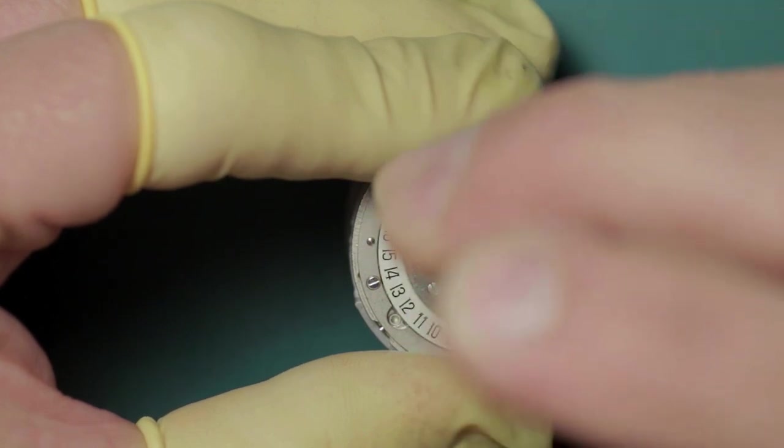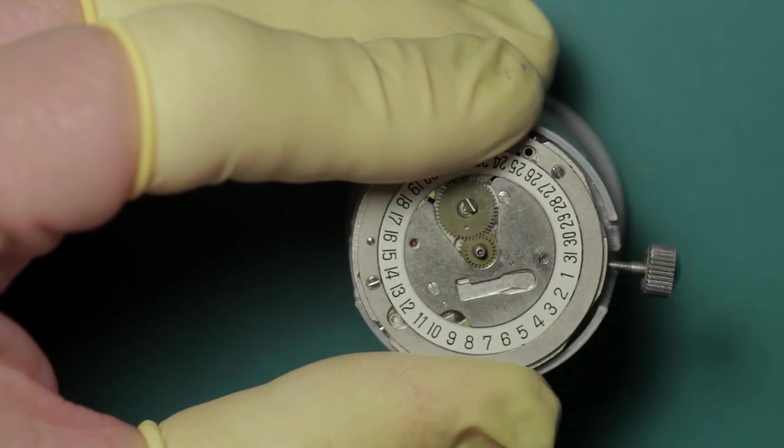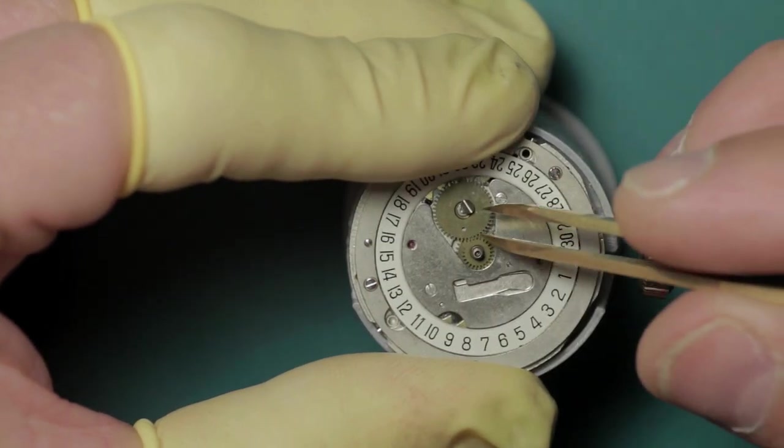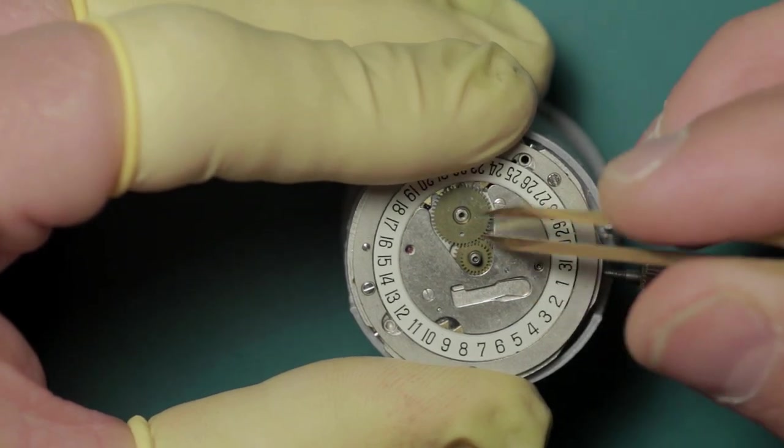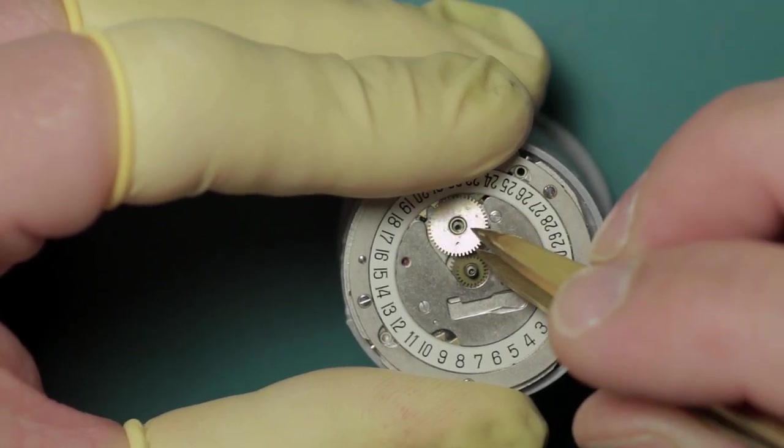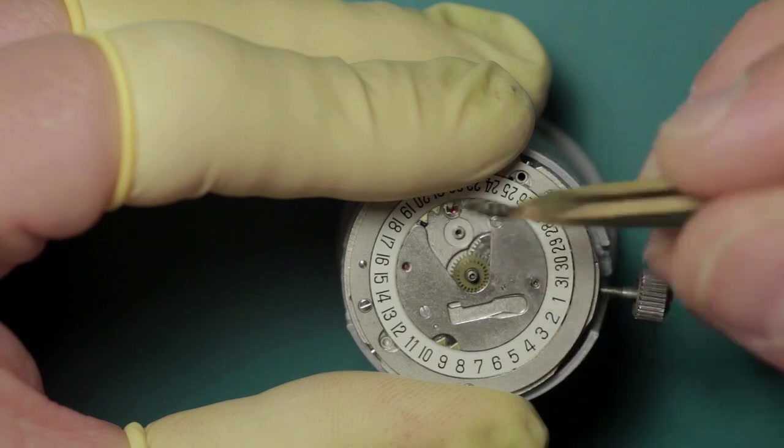Once they are removed, we flip back to the dial side and I begin stripping the dial side by removing the calendar advance disk which is held by a single screw.